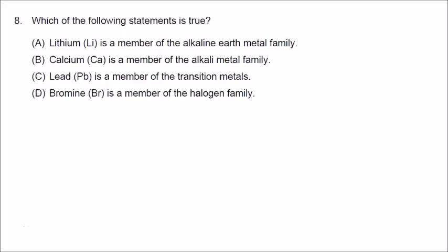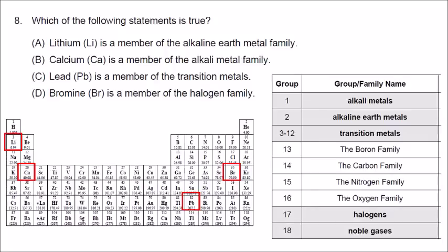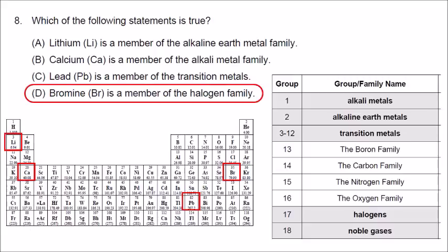Number eight: looking at family names — alkali metals, alkaline earth metals, transition metals, and halogens — for the elements lithium, calcium, lead, and bromine. Group 1 is the alkali metal family, so lithium is an alkali metal. Group 2 is alkaline earth metals, so calcium is an alkaline earth metal. Lead is not a transition metal (groups 3 to 12). But D is correct: bromine (Br) is a member of the halogen family in group 17. Noble gases are found in group 18.